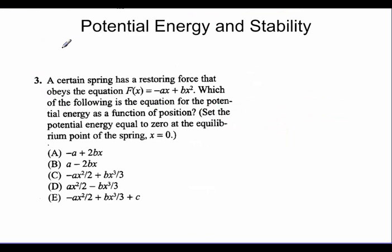This is an AP problem that you might see. It says a certain spring has a restoring force that obeys the equation f of x equal to minus ax plus bx squared, which is the following equation that equals potential energy as a function of position. Now, again, just go back that we know that negative du over dx is equal to f of x.